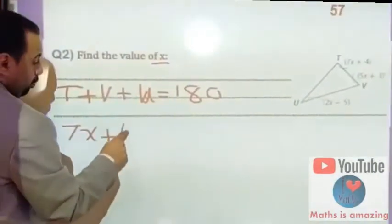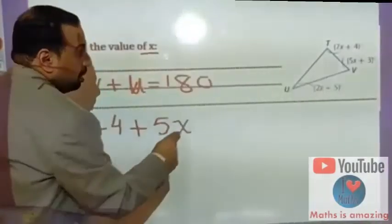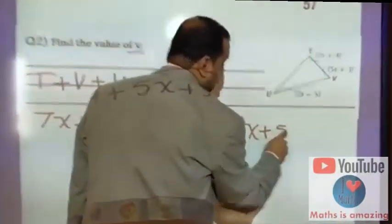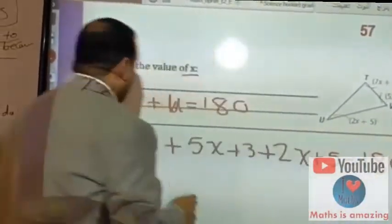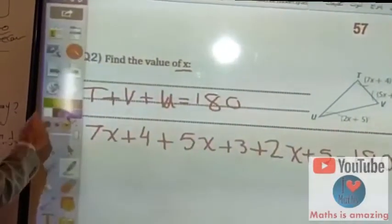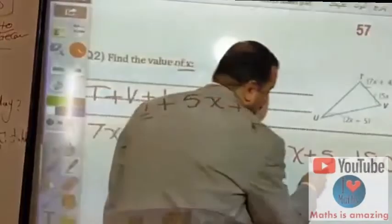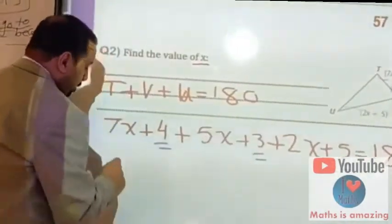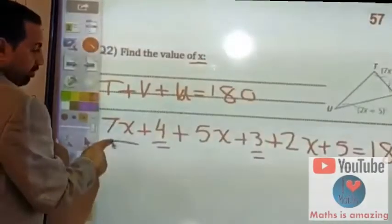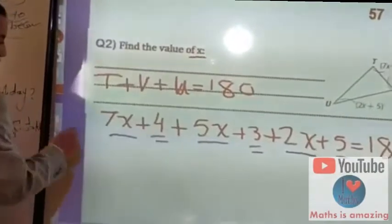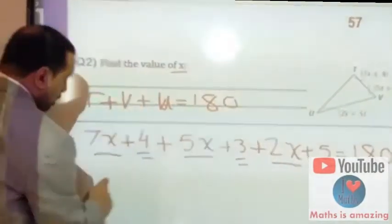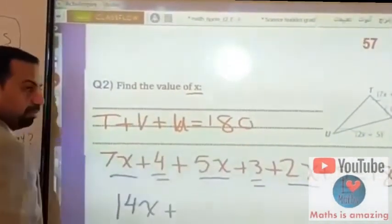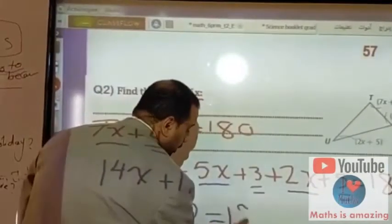So 7x plus 4 plus 5x plus 3 plus 2x plus 5 equals 180. The constant terms 4, 3, and 5 sum to 12, and the x terms are 7x plus 5x plus 2x, which equals 14x. So we have 14x plus 12 equals 180.